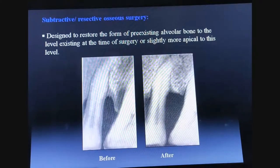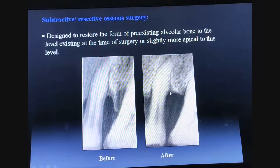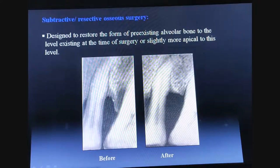Subtractive or resective osseous surgery is designed to restore the form of the pre-existing alveolar bone to the level existing at the time of surgery, or slightly more apical to this level. We are removing a portion of the bone towards a more apical position — this is the subtractive or resective osseous surgery approach.